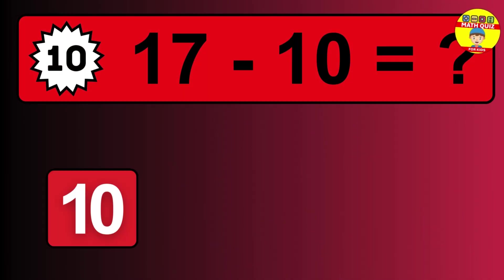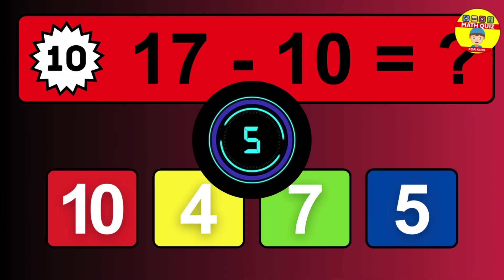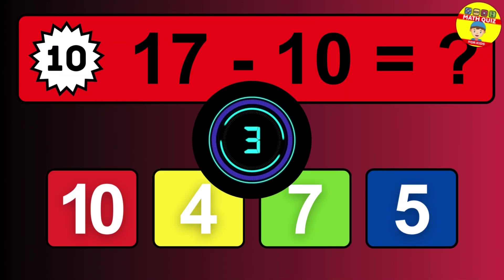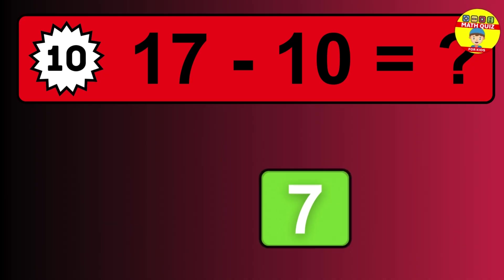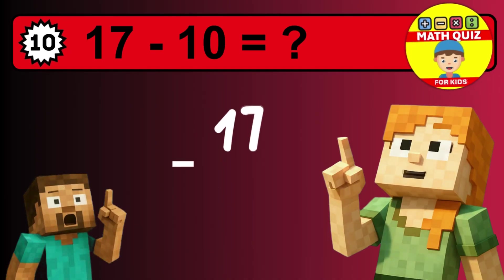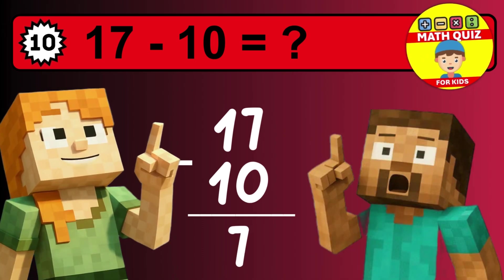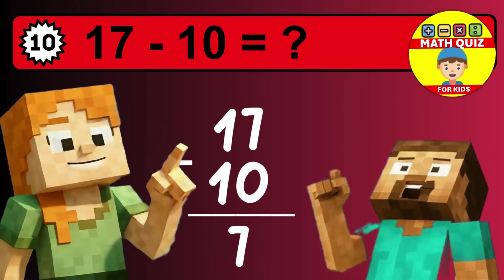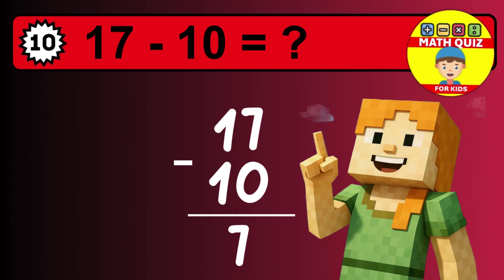What is 17 minus 10? Time to think. Let's solve this step by step. We start with the units: 7 minus 0 is 7. Then we go to the tens: 1 minus 1 is 0. The final answer is 7.